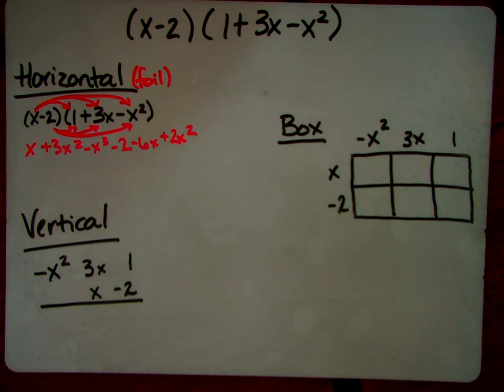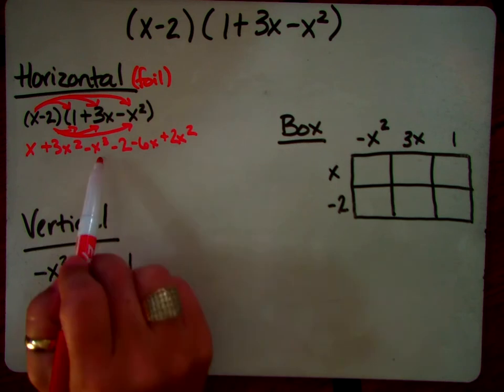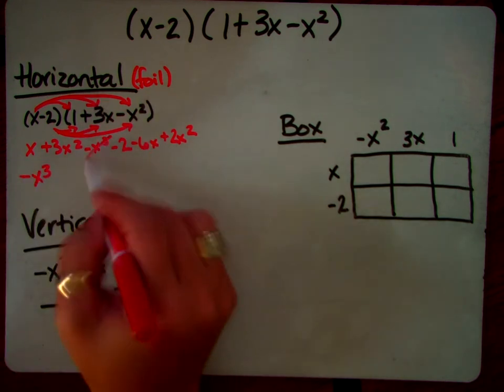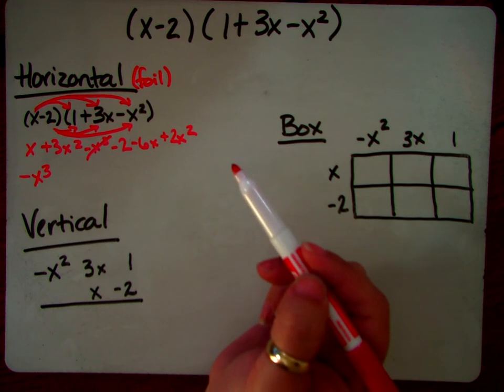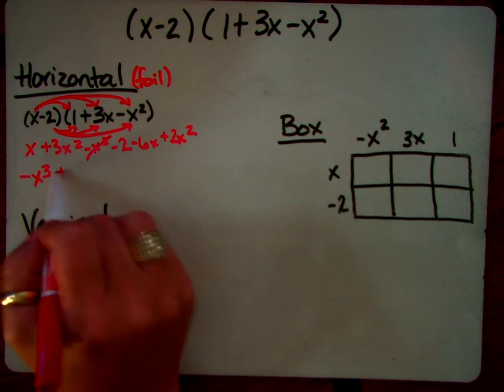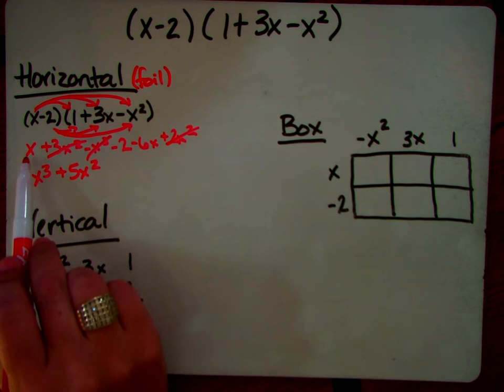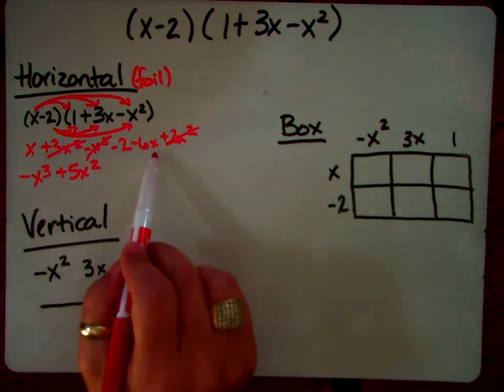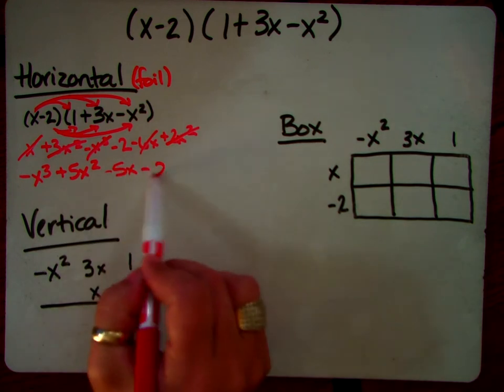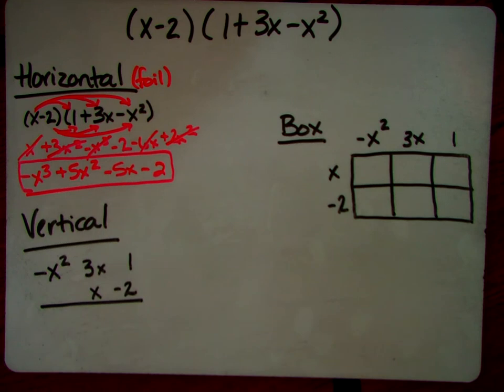Okay, now all you have to do is combine your like terms. So I would scan this and say, what's my highest exponent? Well, I have a negative x cubed. So that goes first, and I'm done with that one. After the cube comes the squares. So I have a 3x squared and a 2x squared. So that's a 5x squared. Now I have my x's. I have an x and a negative 6x, which give me a negative 5x. Those are gone. And then a negative 2. So this is going to be my answer. So that's the horizontal method.